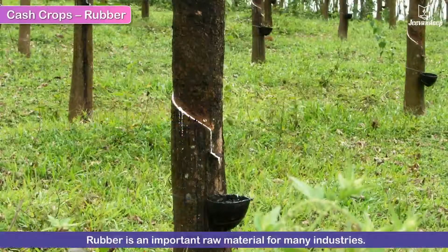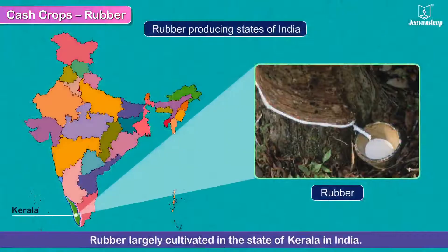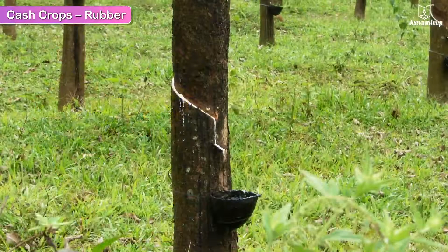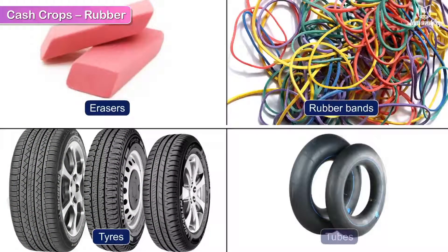Rubber is an important raw material for many industries. It is largely cultivated in the state of Kerala in India. Rubber is used for making many things like erasers, rubber bands, tyres and tubes, etc.